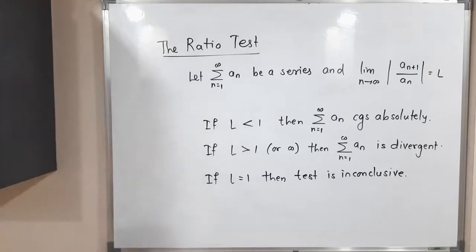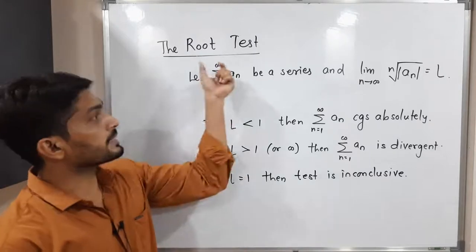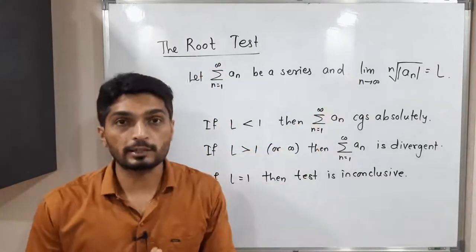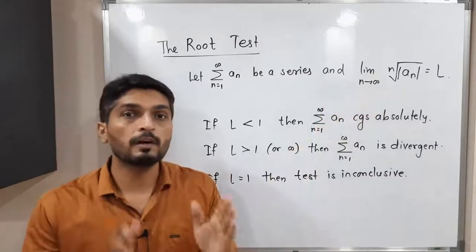So make a screenshot of it. After that, we will discuss root test. See in the root test, again, we consider we have a series summation an. So there is root test, that means definitely we need to find the nth root here. So what we do, we find the limit of nth root of mod an.